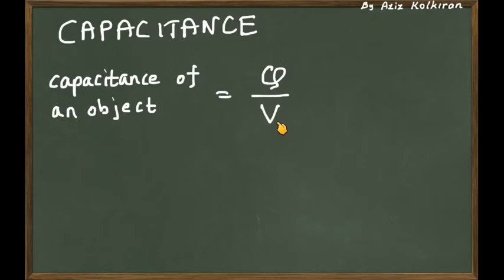V here is the potential of this metal. For example, if you have a metal sphere with charge Q and radius R, then the potential of the metal sphere is K times Q divided by R. Its total charge is Q, and its potential is K times Q divided by R. If you divide Q by V, you will obtain a new physical quantity, which we call the capacitance.